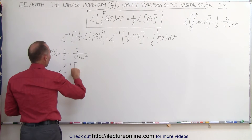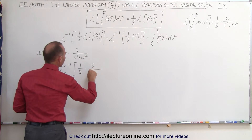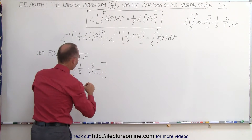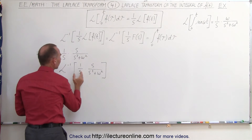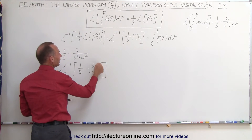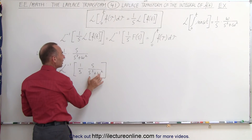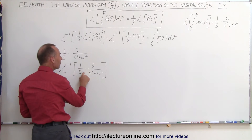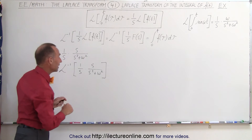But since that portion is multiplied times 1 over s, when we take the inverse Laplace transform of the whole quantity — 1 over s times s over s squared plus omega squared — we recognize that 1 over s means we take the integral. So the result is not just the cosine of omega t, but the integral of the cosine of omega t.